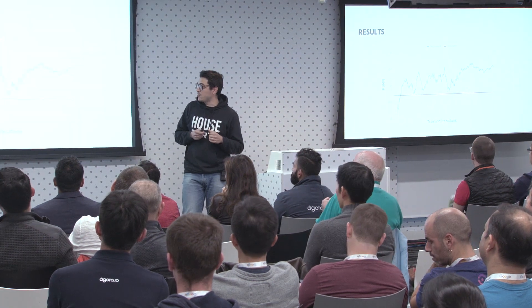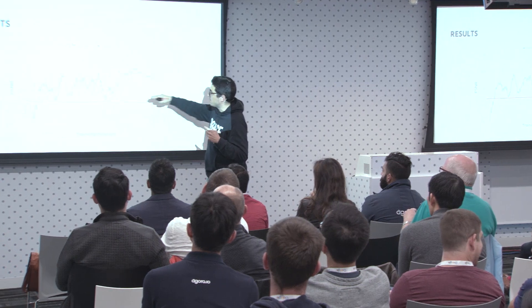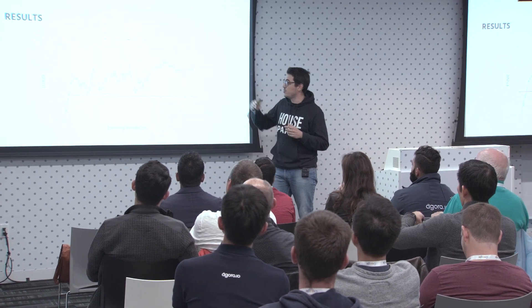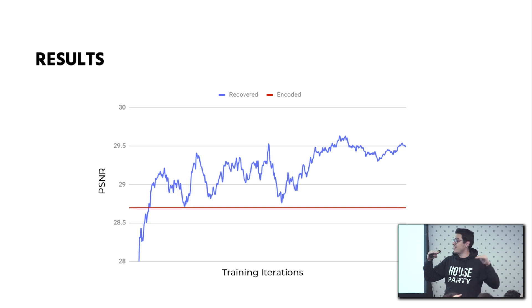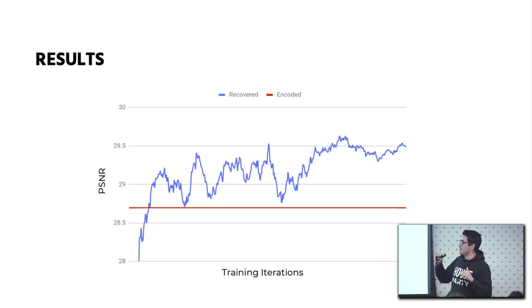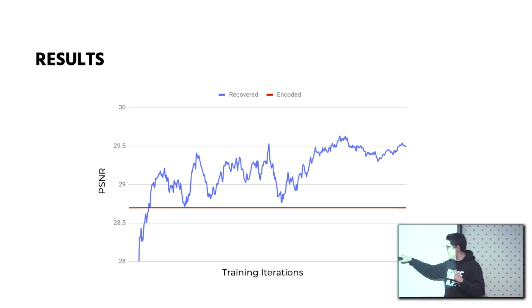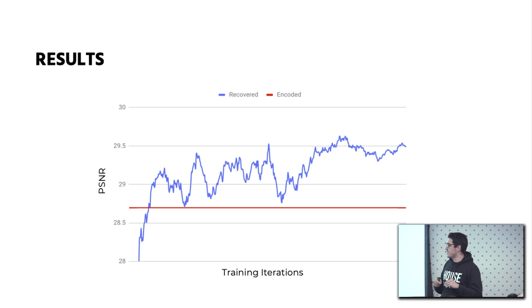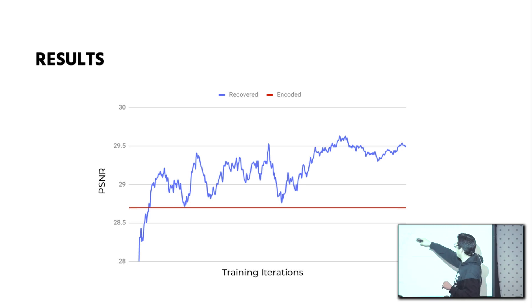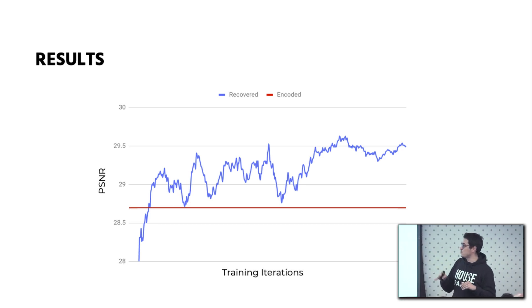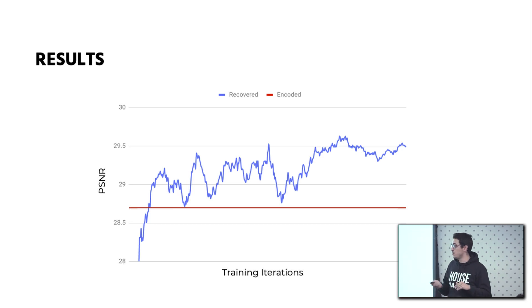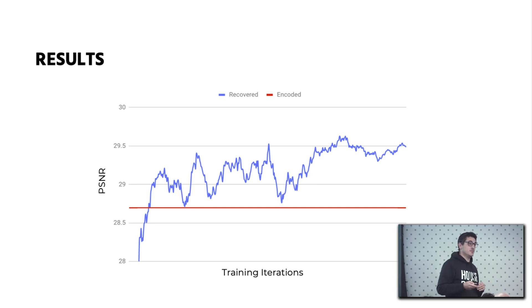We started training this algorithm. The red line is the quality of the encoded images — the quality of the image with artifacts — and the goal is to see if our algorithm can improve that quality, restoring the images so that you get better quality than this baseline. We iterated the learning process and eventually got to a point where it was stable, and we were getting around a 1 dB improvement in the peak signal-to-noise ratio, which is what we were expecting based on the results in the papers.